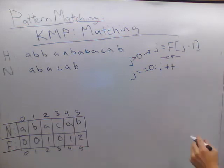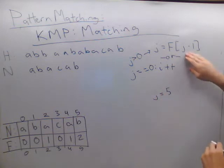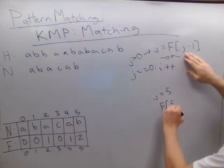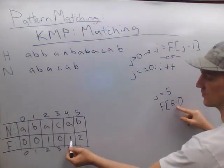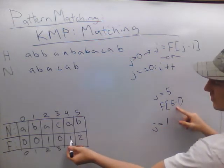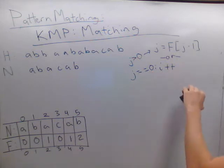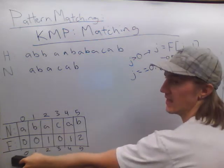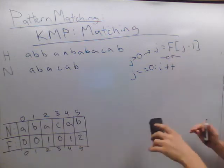This first rule works like this: as an example, if j is equal to five, we're going to look up the failure function at five minus one, so we look up the failure function at index four, and j is now going to be equal to one. If j is equal to zero, that would cause problems because we do not have an index of negative one inside our failure function. So in that case, we're just going to increment i and move to the next character.